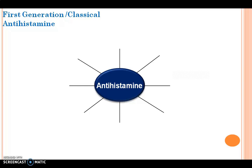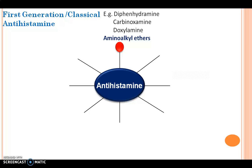First, we see the different classes that come under 1st generation antihistamines, also called classical antihistamines. The first class is Aminoalkyl ethers. Examples are diphenhydramine, carbinoxamine, and doxylamine.